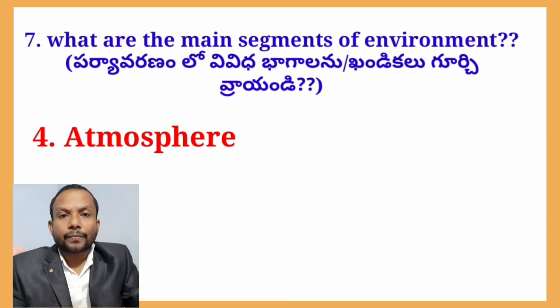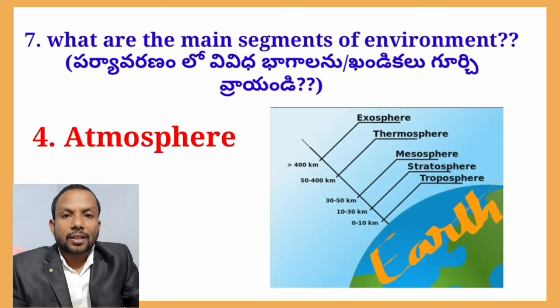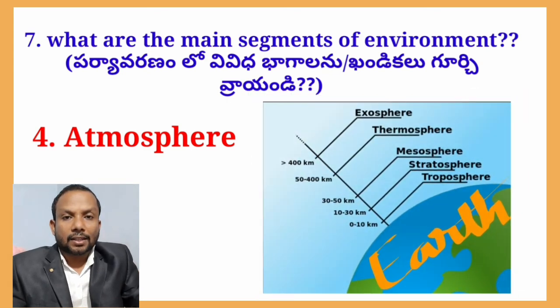Other minor components of the atmosphere include trace gases present in very small percentages, such as 0.15% and 0.03% for various gases including CO₂ and others, which although small in quantity, are very important for environmental processes.